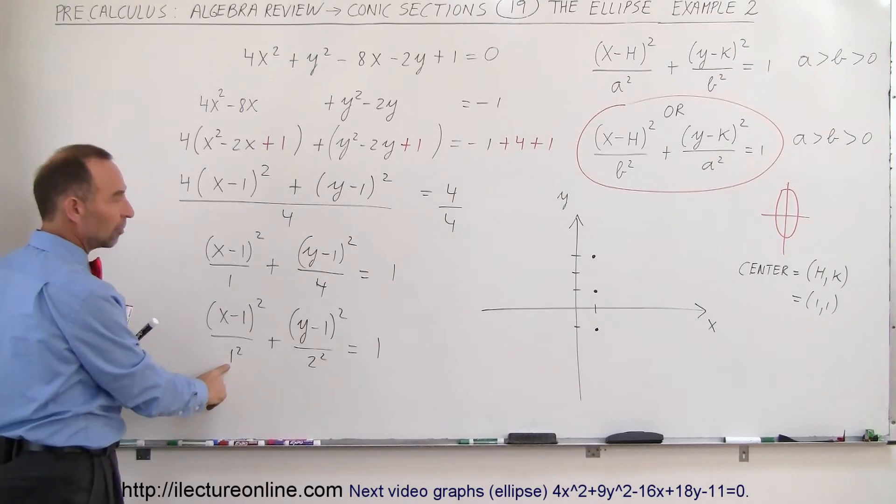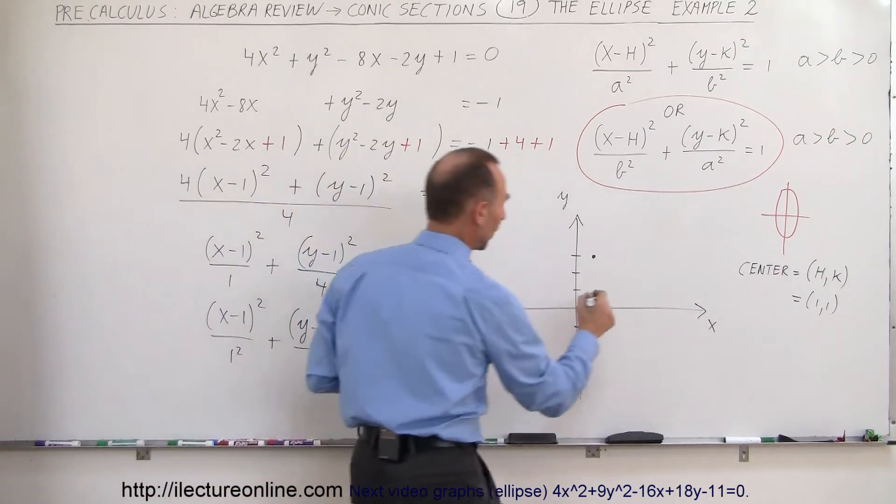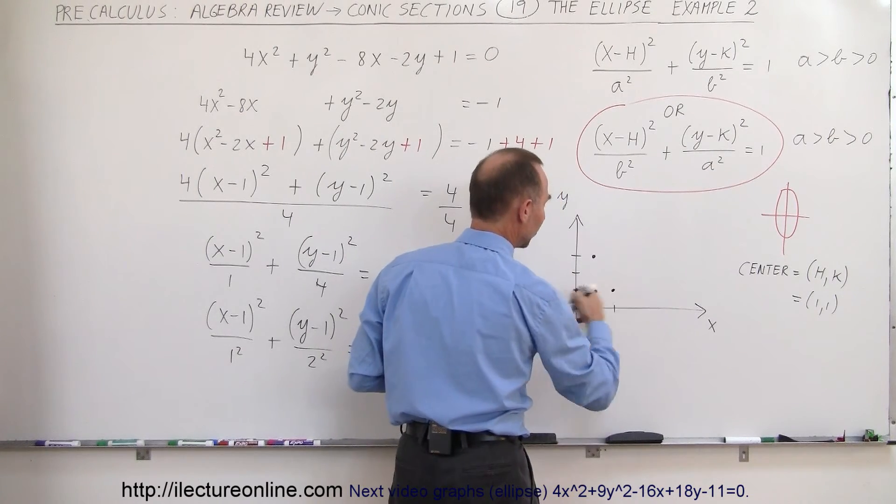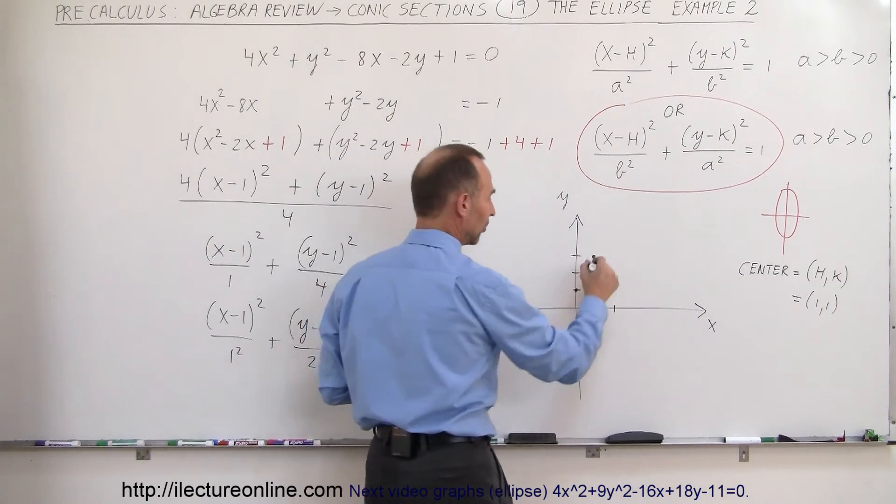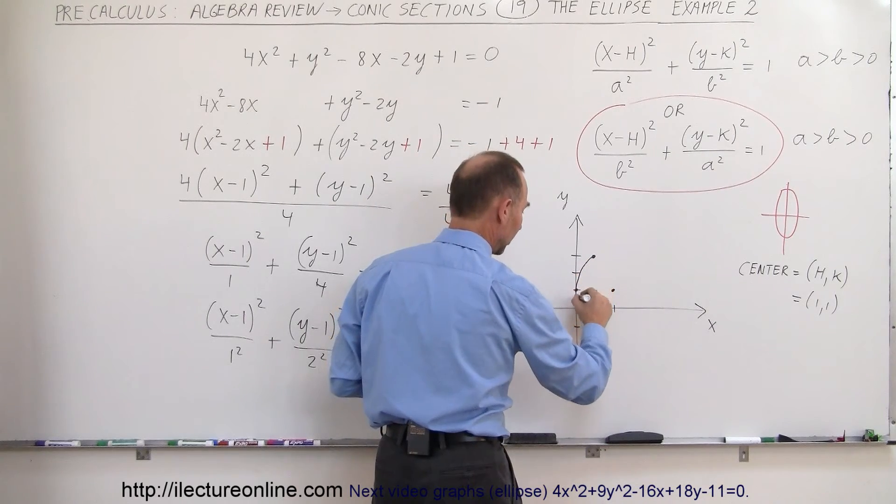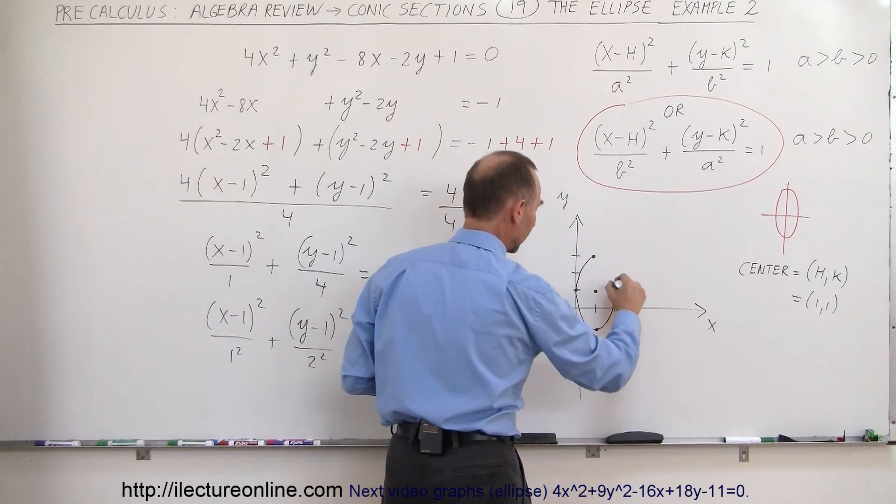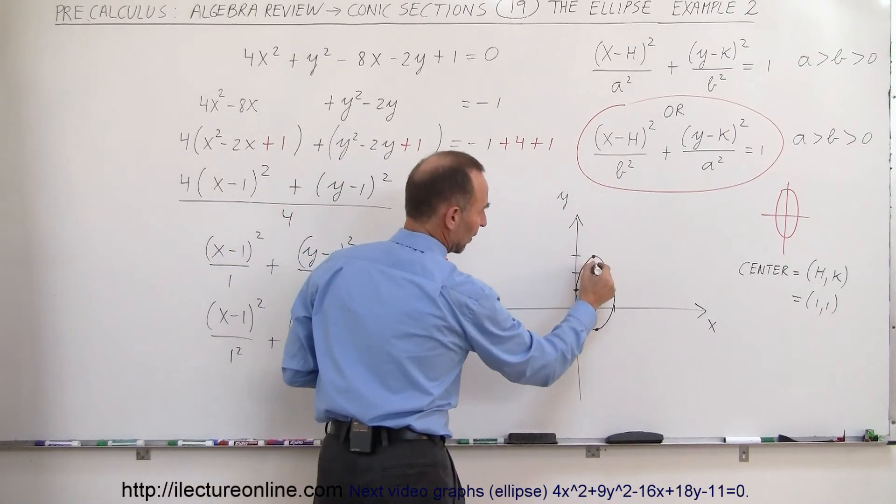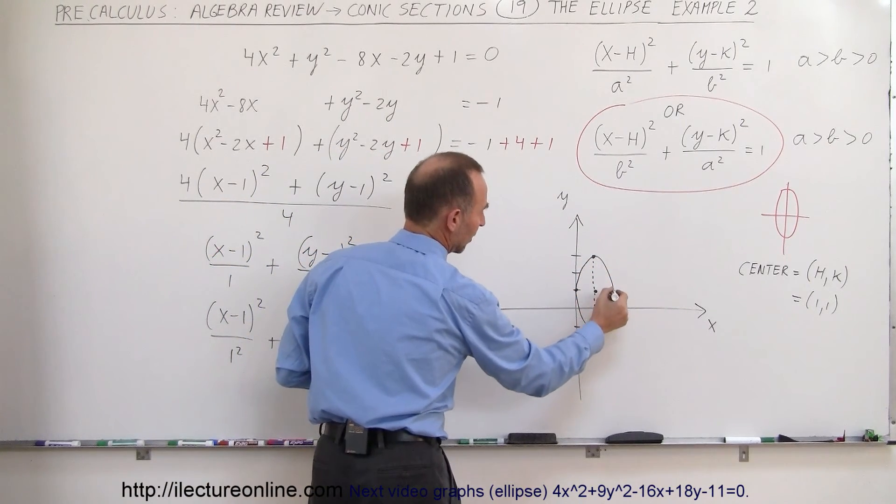Horizontally, it'll be plus or minus 1, so that means I go to the right one and to the left one. So those are the vertices of the minor axis, those are the vertices of the major axis, and so my ellipse is going to look like this. Here's the major axis and here's the minor axis.